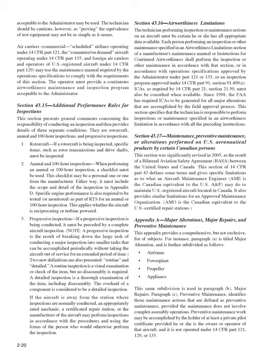Section 43.17, Maintenance, Preventive Maintenance, or Alterations Performed on U.S. Aeronautical Products by Certain Canadian Persons. This section was significantly revised in 2005 as a result of a Bilateral Aviation Safety Agreement (BASA) between the United States and Canada. It defines terms and gives specific limitations as to what an aircraft maintenance engineer (AME), the Canadian equivalent to the U.S. A&P, may do to maintain U.S.-registered aircraft in Canada. It also provides similar limitations for an approved maintenance organization (AMO), the Canadian equivalent to U.S. certified repair stations.